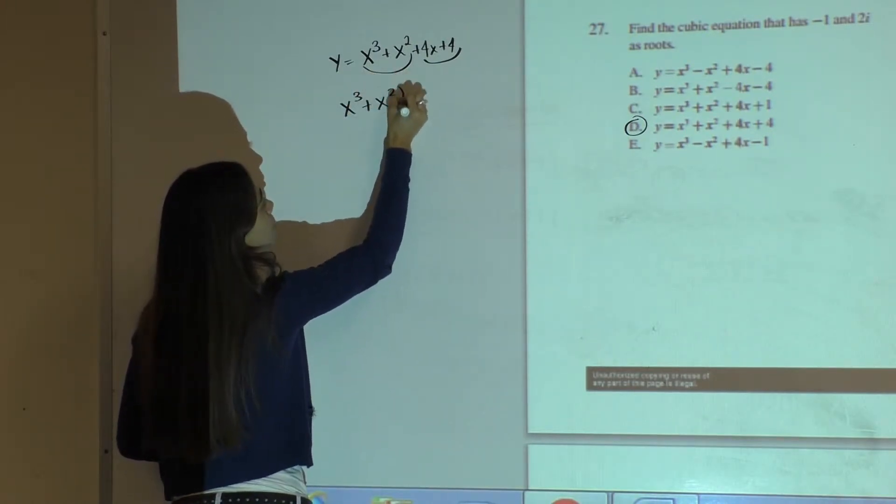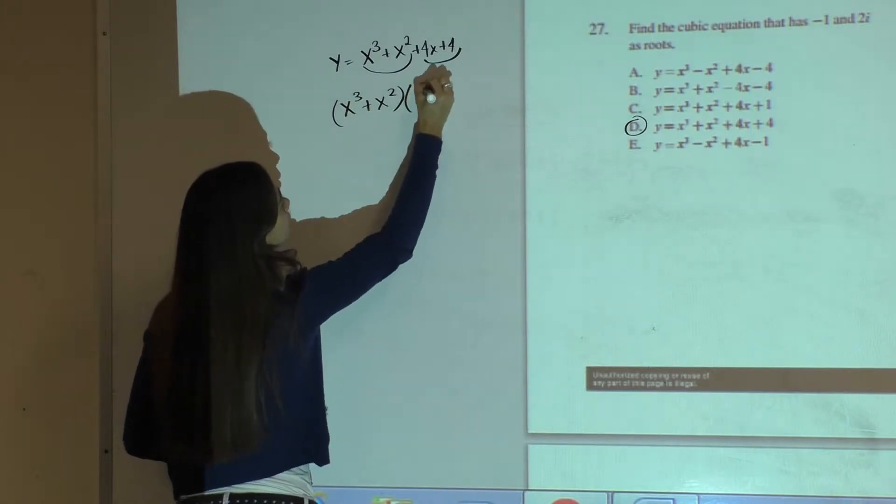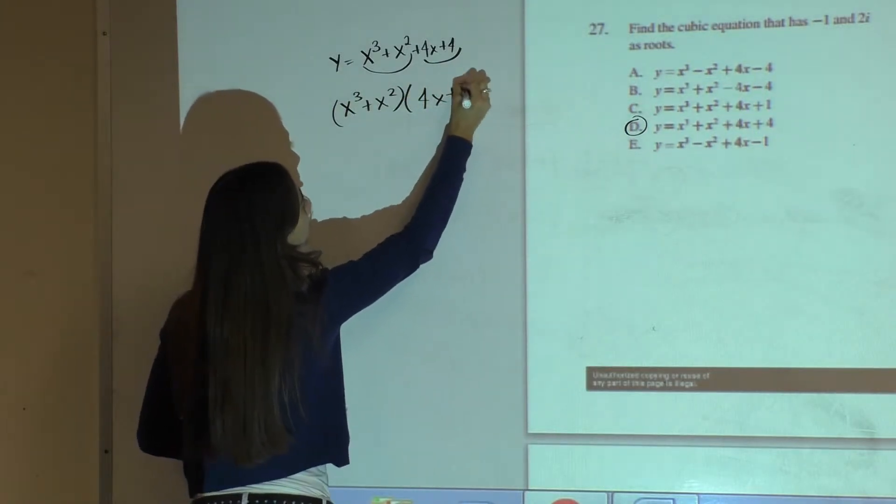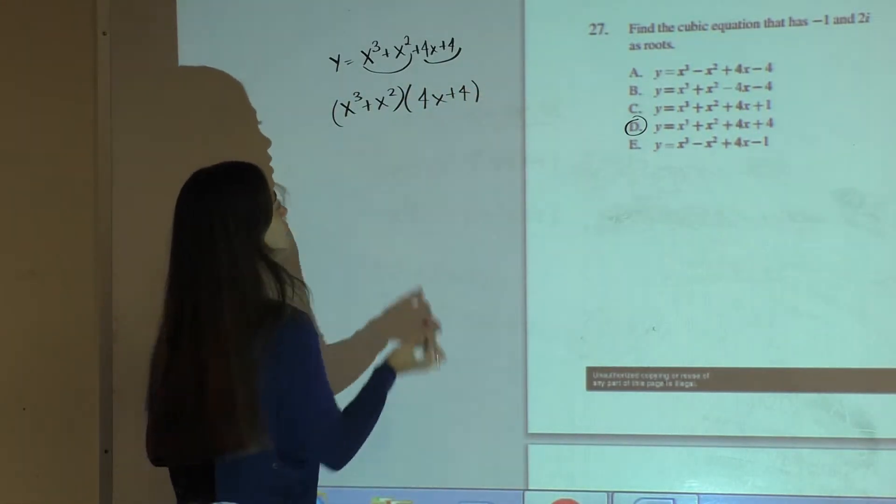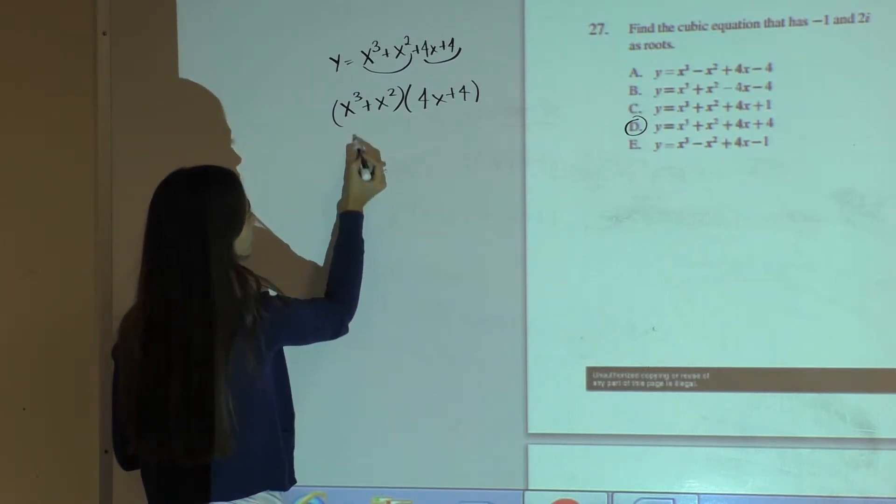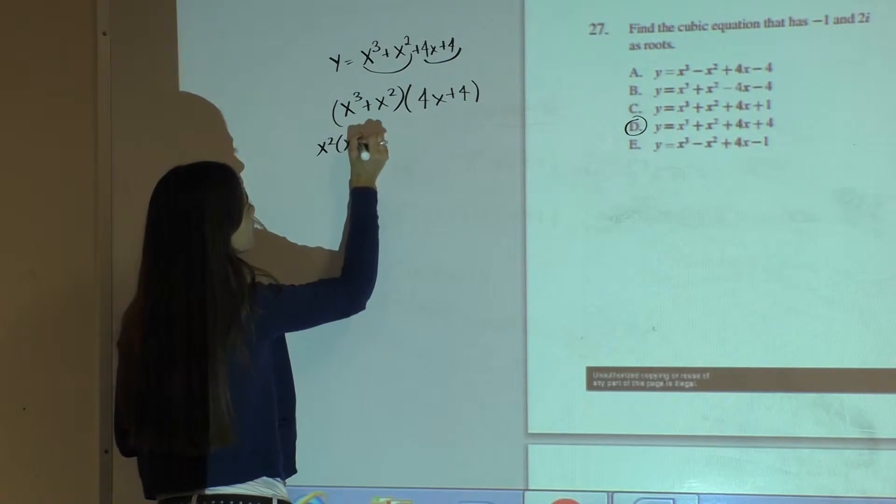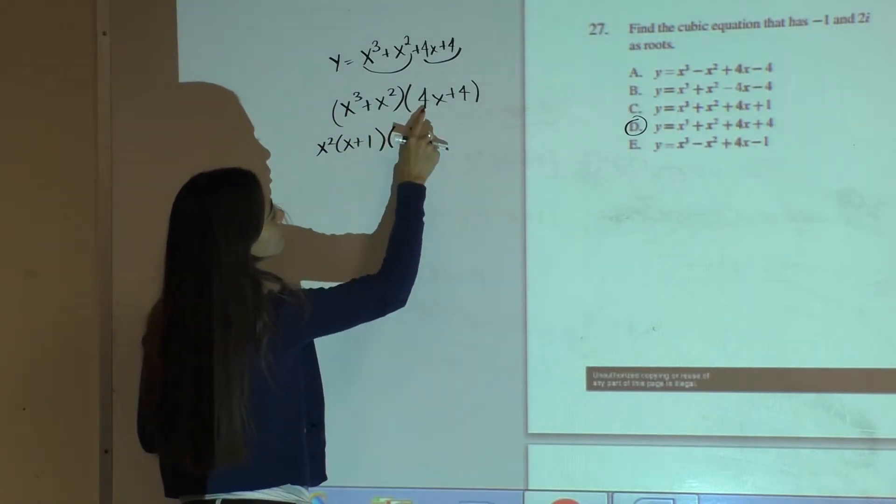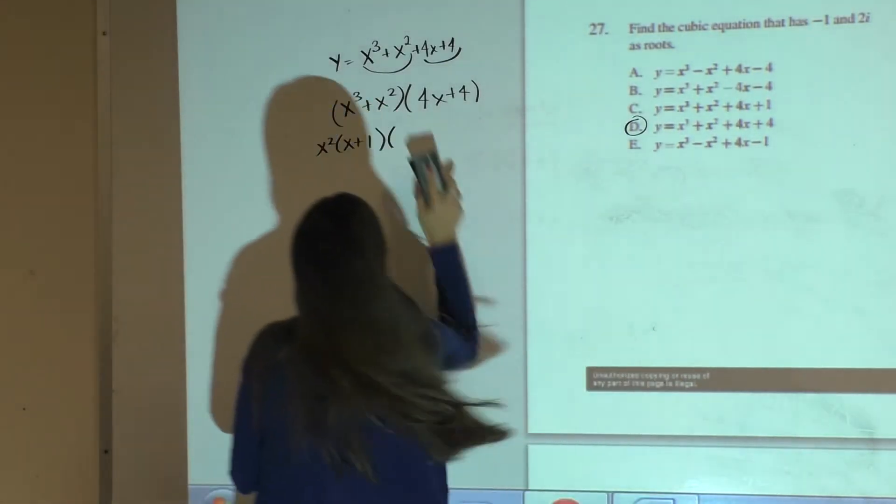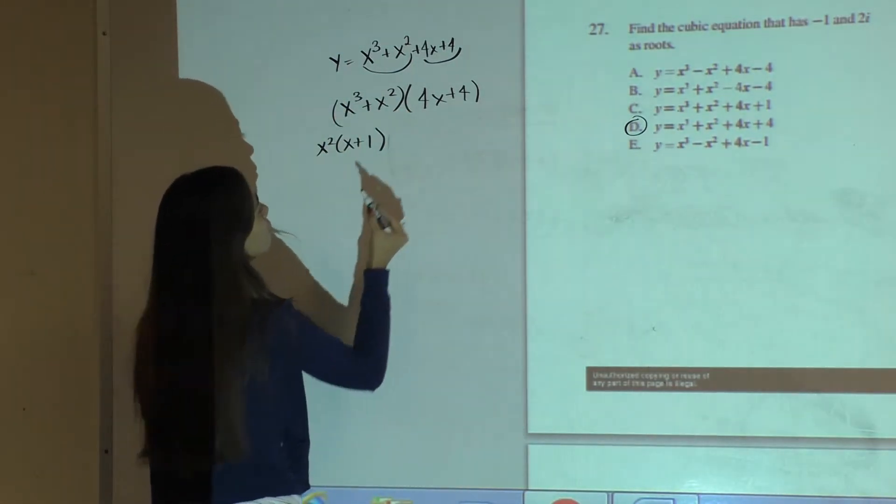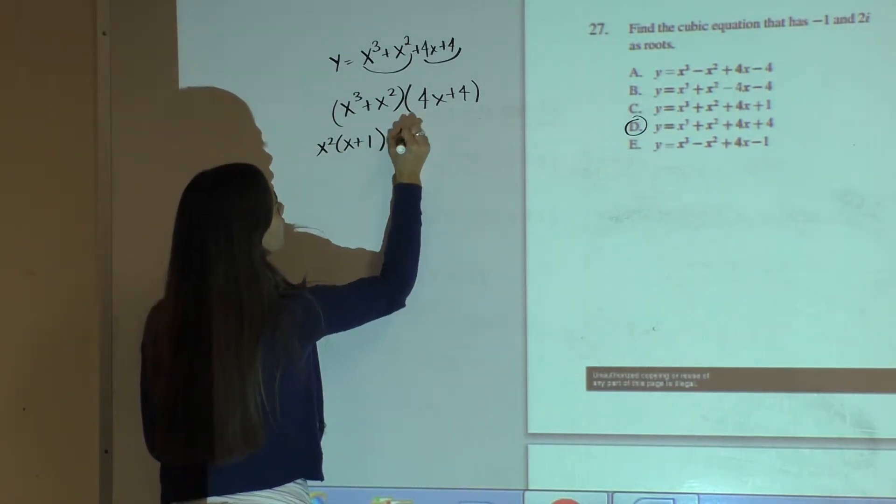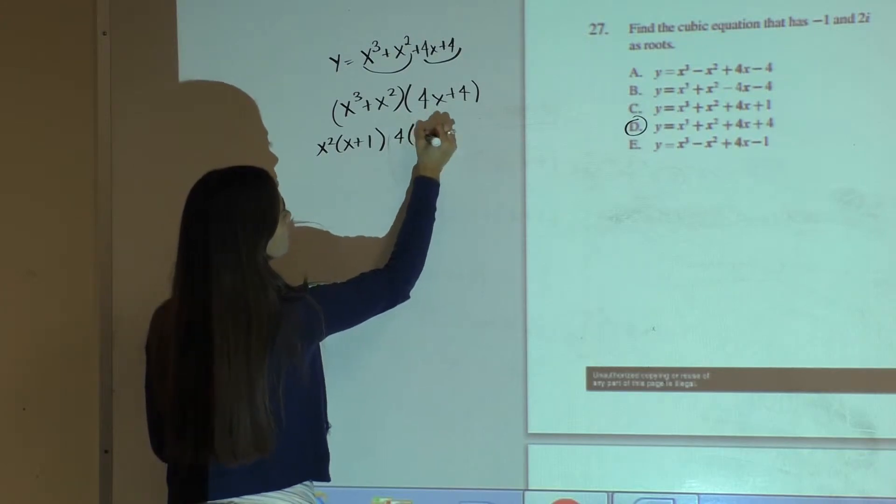I will just rewrite what I factored together and factor them out individually. I can factor out an x squared and be left with x plus 1, and from this side I can factor out a 4, and that will also give me x plus 1.